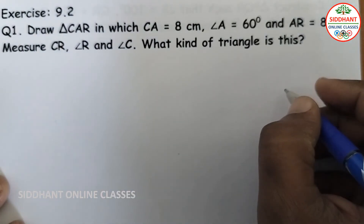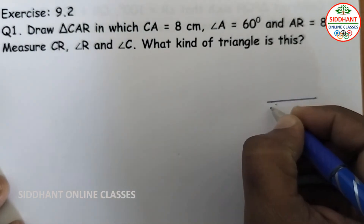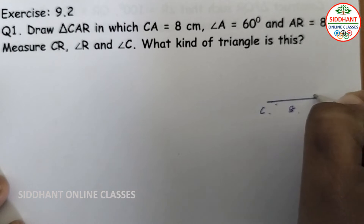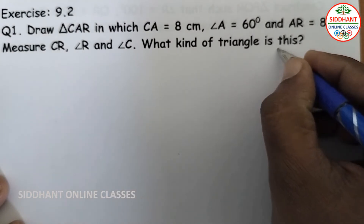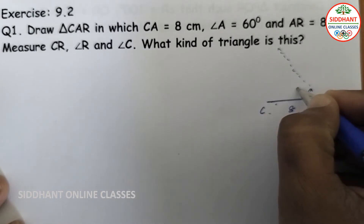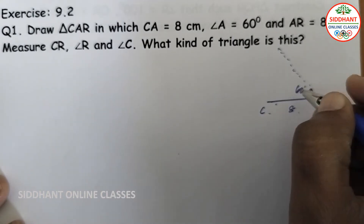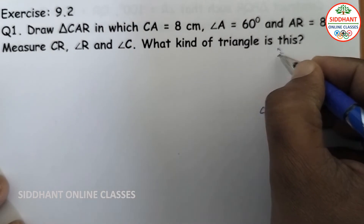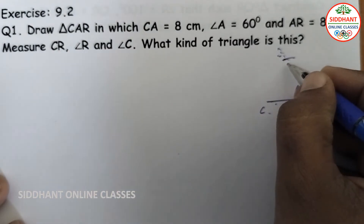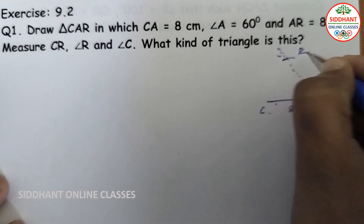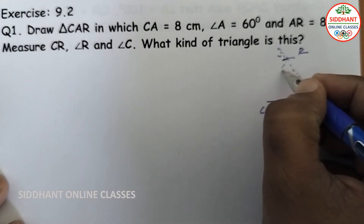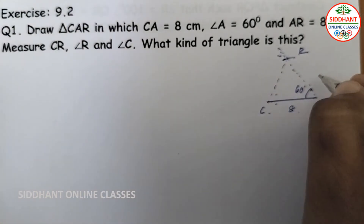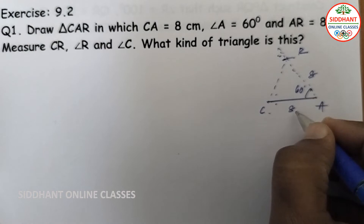So roughly, this is CA with 8 cm. From Angle A we take 60 degrees with a protractor. So this is 60 degrees. Then AR is 8 cm, so 8 cm we cut here. We get a point R here and join these points to get a triangle. So this is 8 cm, this is 60 degrees, and this is 8 cm.